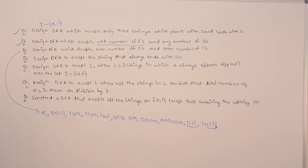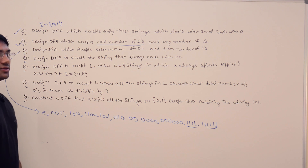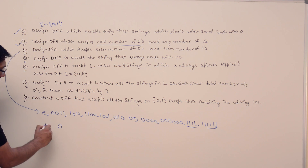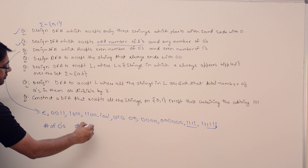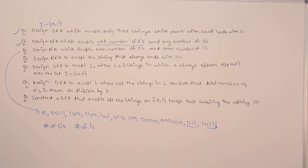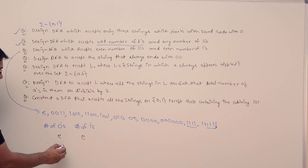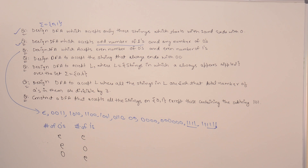To draw this DFA, let us first identify the different cases we can get. There are multiple ways of drawing this, and I will discuss those in upcoming videos. For simplicity, let us draw it in the simplest manner. The possibilities are: number of zeros even and ones even, zeros even and ones odd, zeros odd and ones even, and both odd — four possibilities in total.